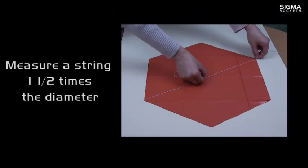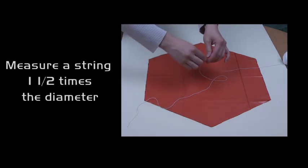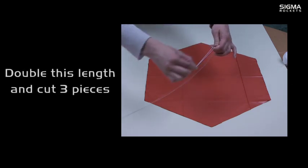Measure the parachute string one and a half times the diameter of the parachute. Double this length and cut three pieces.